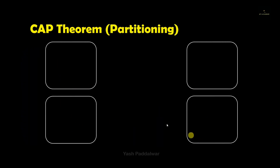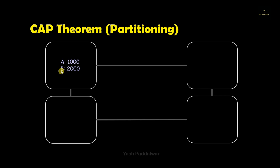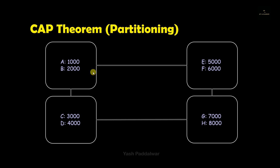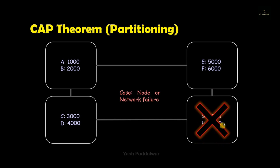Let's see an example. In this particular example we have taken four nodes connected with communication channels between them. Since this is a distributed system, each node will be concerned with different data. For example, node 1 has data A and B with values 1000 and 2000. Now let's consider a case where the node containing data G and H has a network issue or communication breakdown. Partitioning states that in this situation, the other nodes containing data AB, CD, and EF must work totally fine without any disturbance.